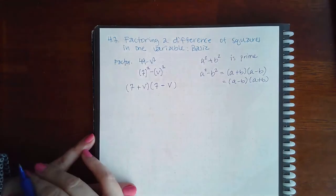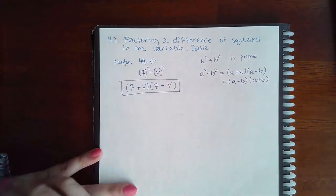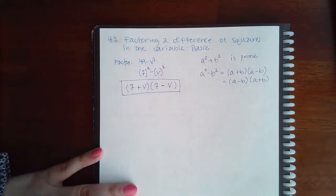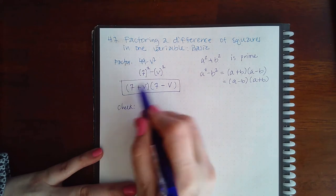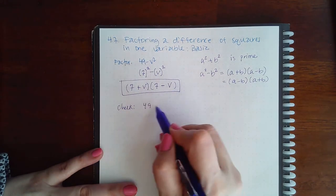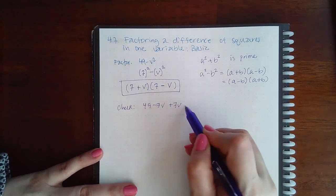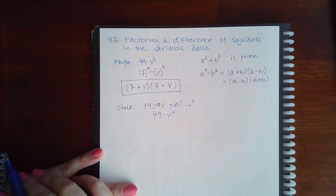And this is the factored answer. You can distribute it and multiply it out and then you'll see that it comes out to this expression—that's if you wanted to check your answer. So that's 49 minus 7v, positive 7v, and then minus v squared. These guys cancel, leaving me with 49 minus v squared.